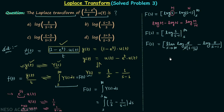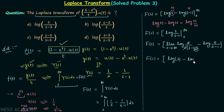Putting s equal to infinity, the upper limit gives log(1 / (1 - 1/∞)). Since 1/∞ equals 0, this becomes log(1), which equals 0. So we have 0 minus log(s / (s-1)).